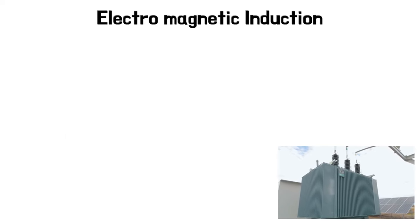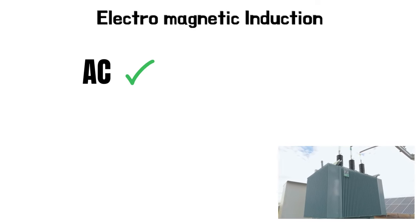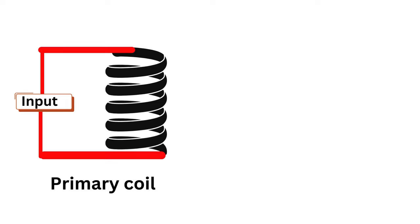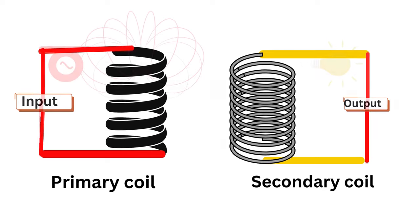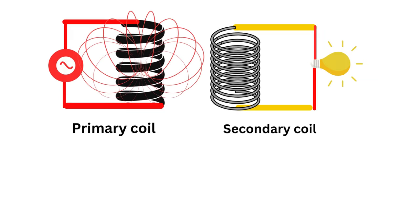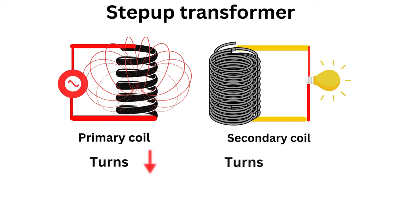Successfully, the electromagnetic induction principle can be used in the transformer. There is an AC current, and the changing magnetic field uses a primary coil. The primary coil, with AC current, produces a magnetic field that transfers to the secondary coil, producing electricity. The electricity from the primary coil is AC, and the secondary coil uses this.